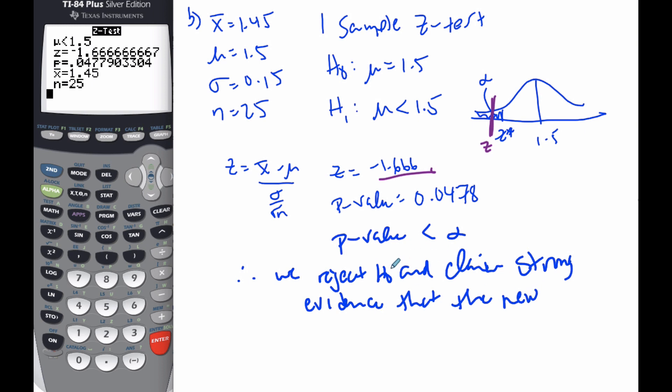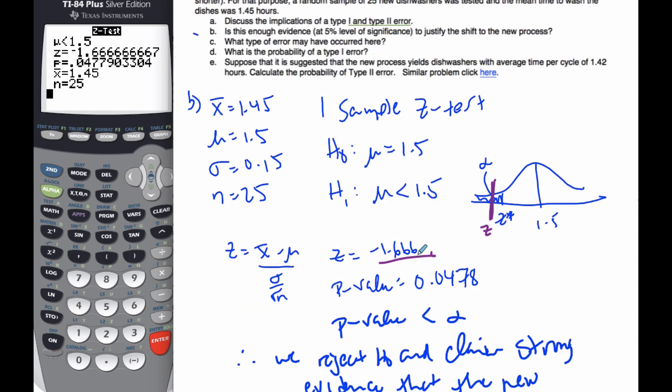we reject H0 and claim strong evidence that the new dishwashers... And we always make our conclusion in the context of the problem. Strong evidence that the new dishwashers are faster. Okay, so that's our hypothesis testing.